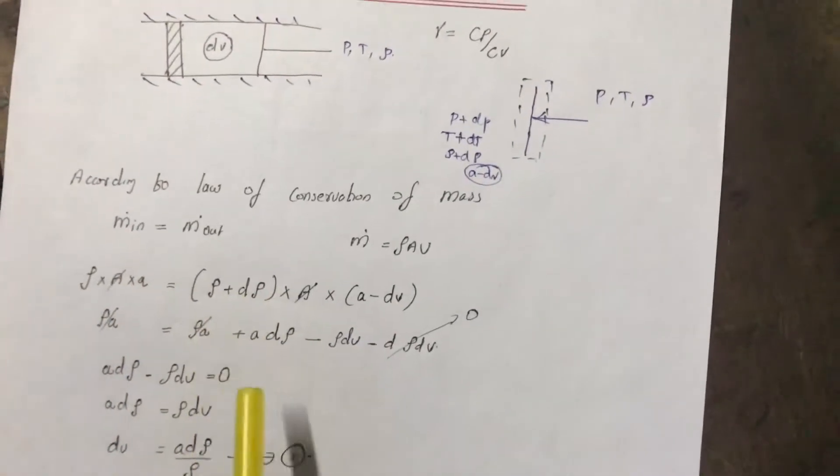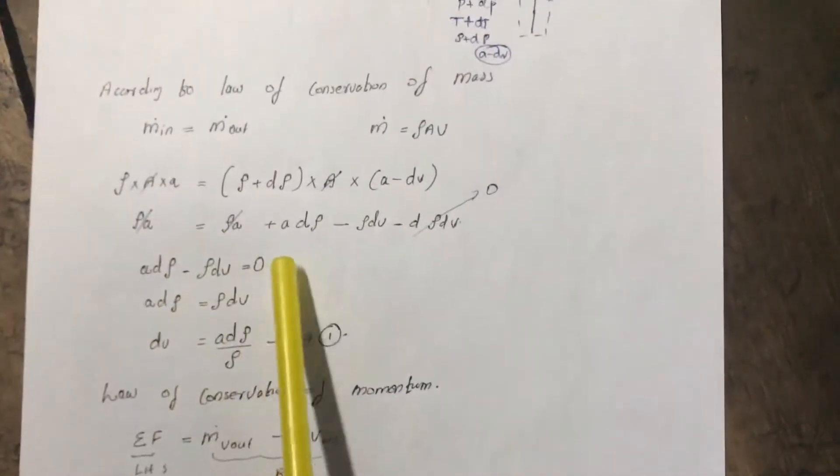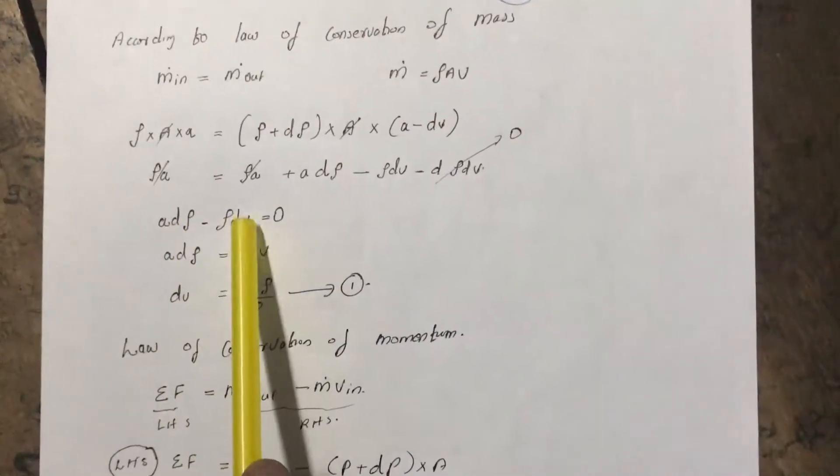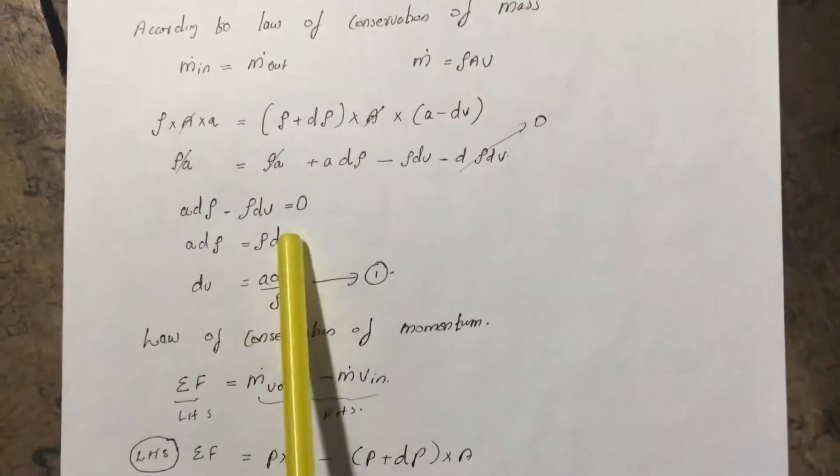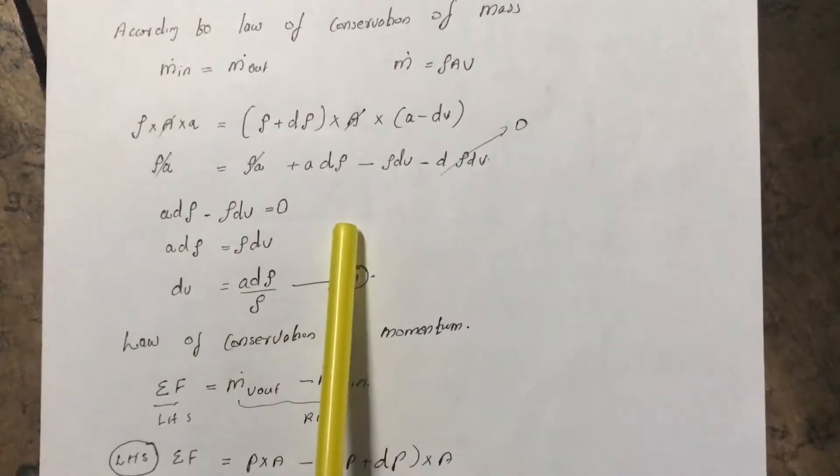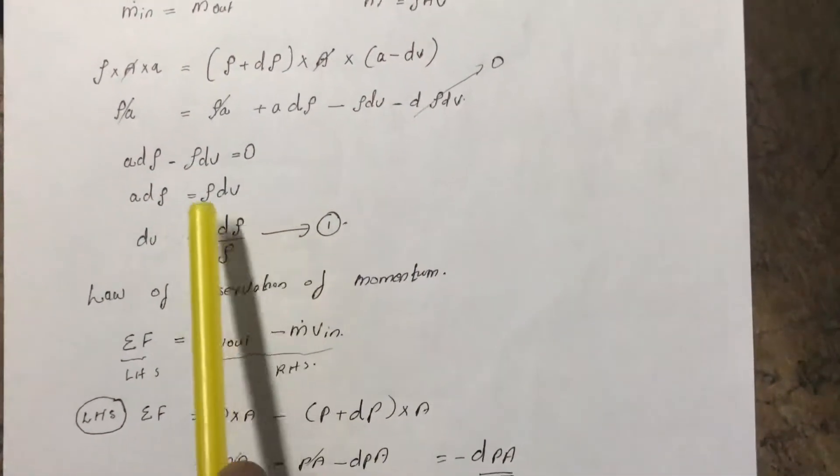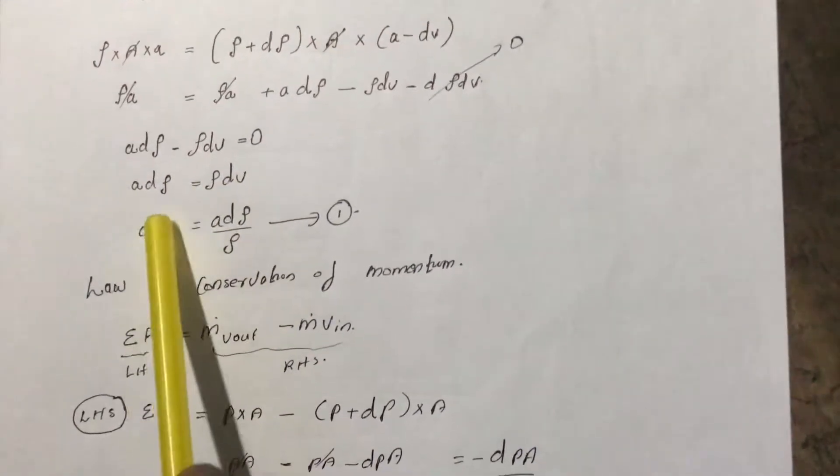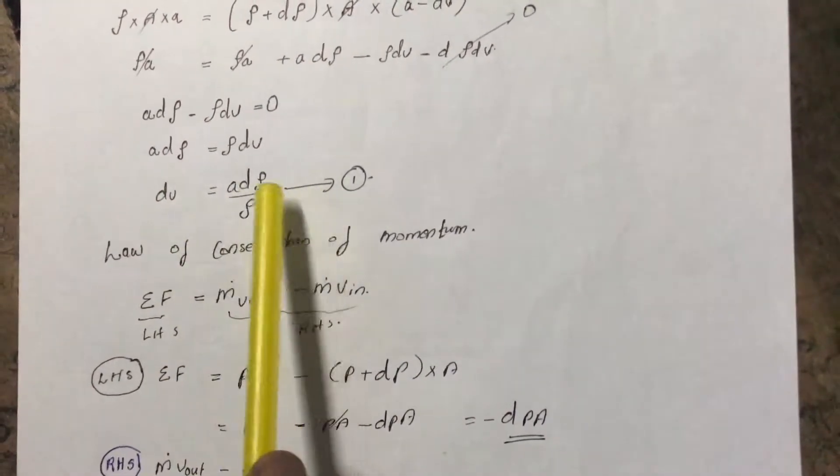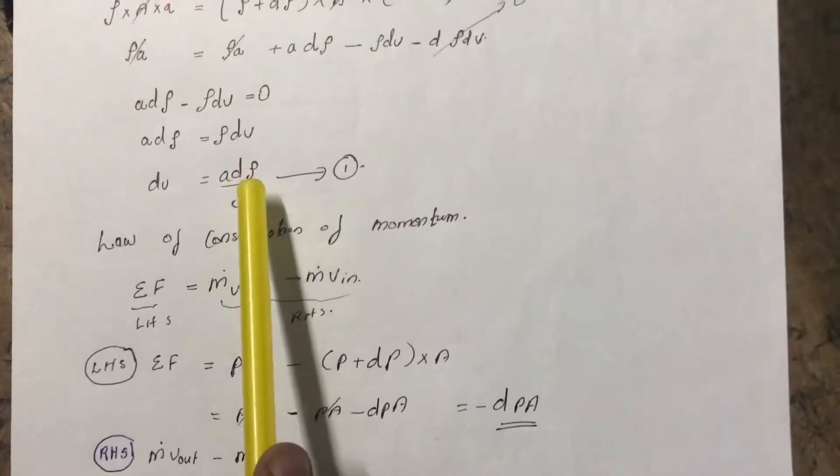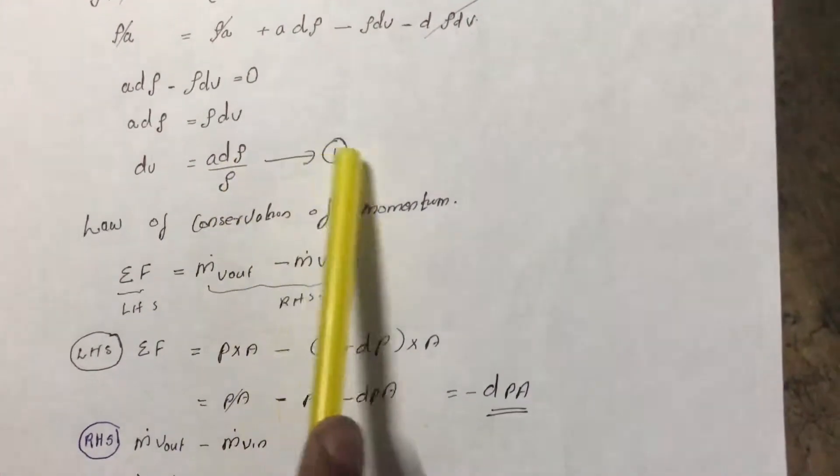Opening this bracket, we can cancel out this term also and we will get the condition as a d rho minus rho dv equal to zero. From this we can find an expression for dv. It is given as dv is equal to a d rho by rho, that is equation number one.